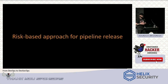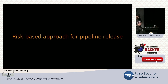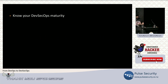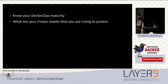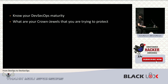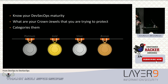If you're failing pipelines for both low severity and critical issues, that won't go well with DevOps teams. Use a risk-based approach: understand your DevSecOps maturity, then identify your crown jewels and categorize them — for example, platinum being the highest priority down to bronze being the lowest.